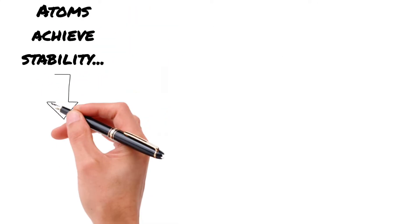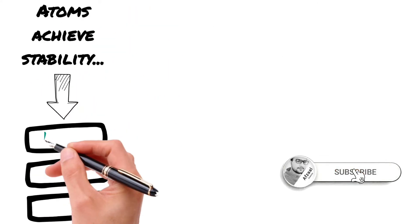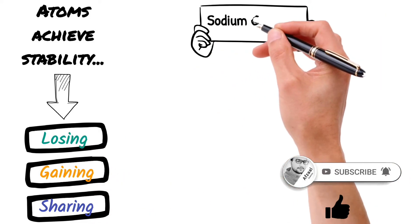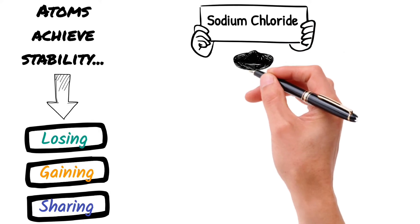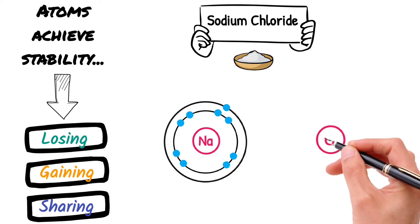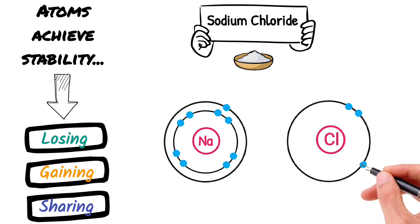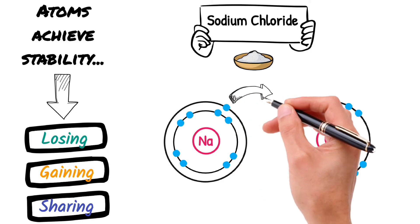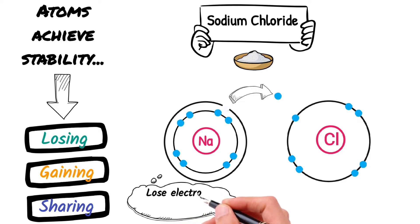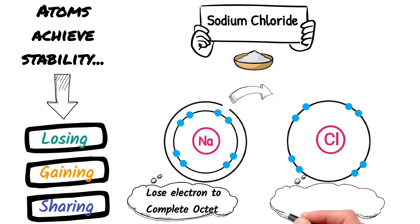Atoms achieve stability by losing, gaining, or sharing electrons with other atoms. Let's talk about sodium chloride, which is also known as table salt. Sodium has one electron in its outermost shell, while chlorine has seven electrons in its outermost shell. This means that sodium wants to get rid of that one electron to have a complete octet, because after losing that electron, the second shell becomes the valence shell, while chlorine wants to gain one electron to complete its octet.